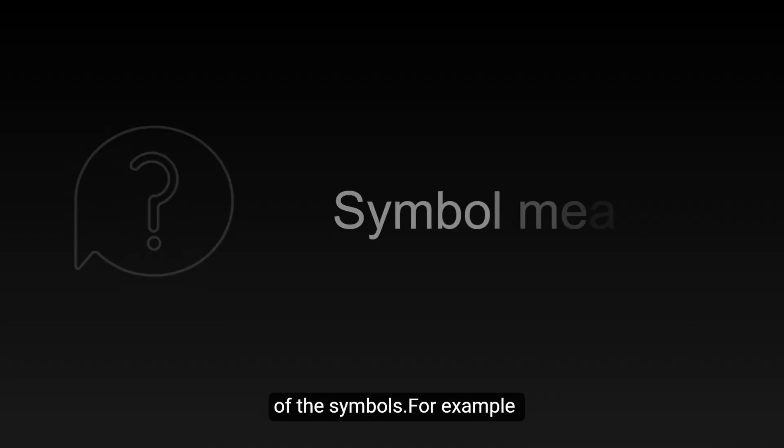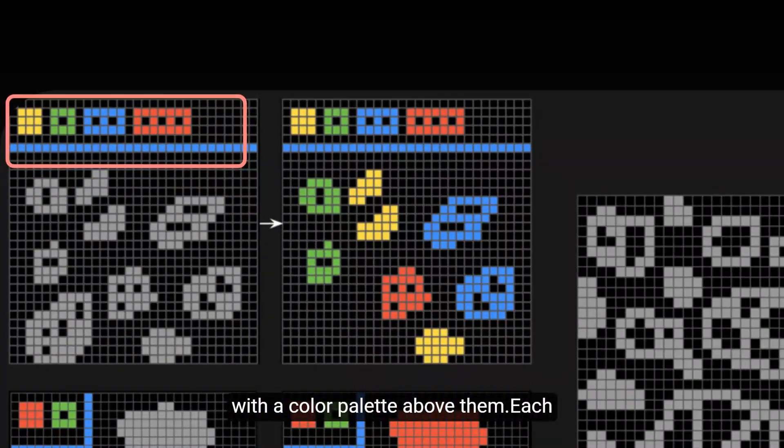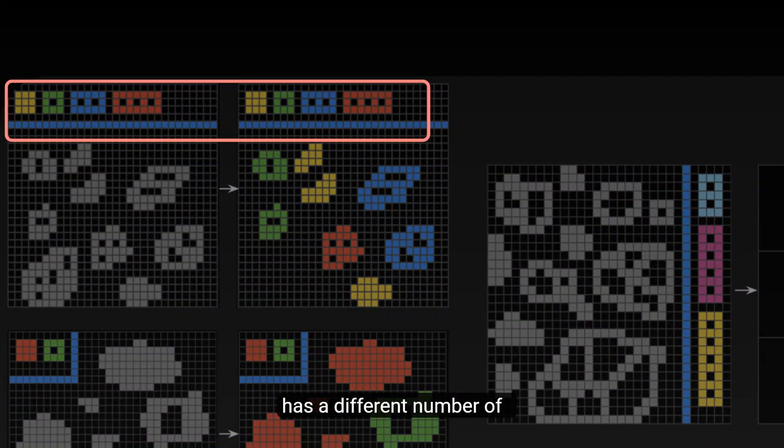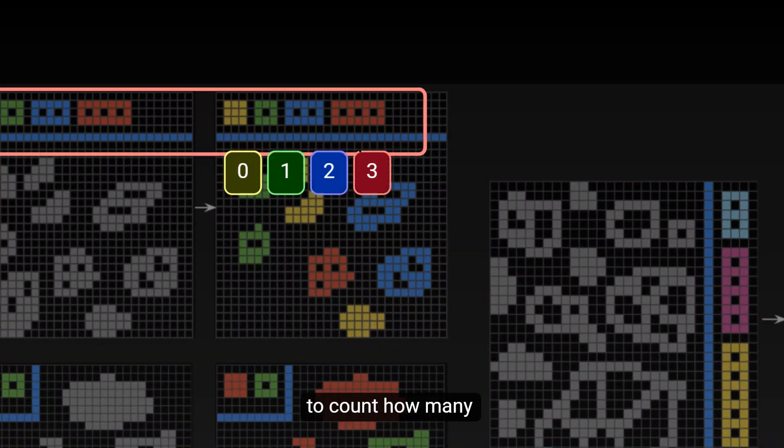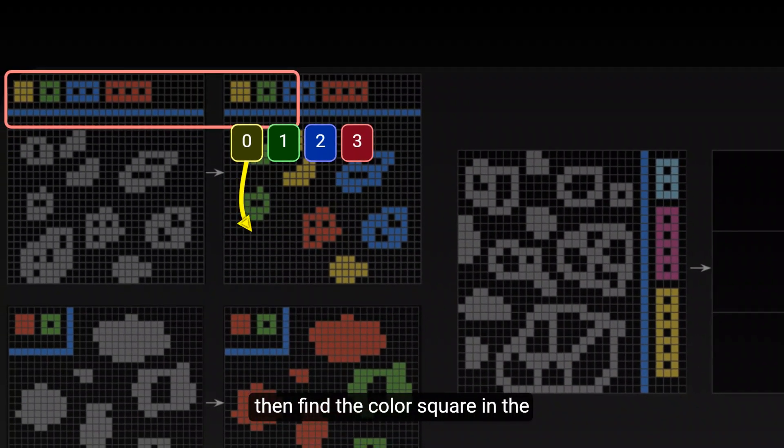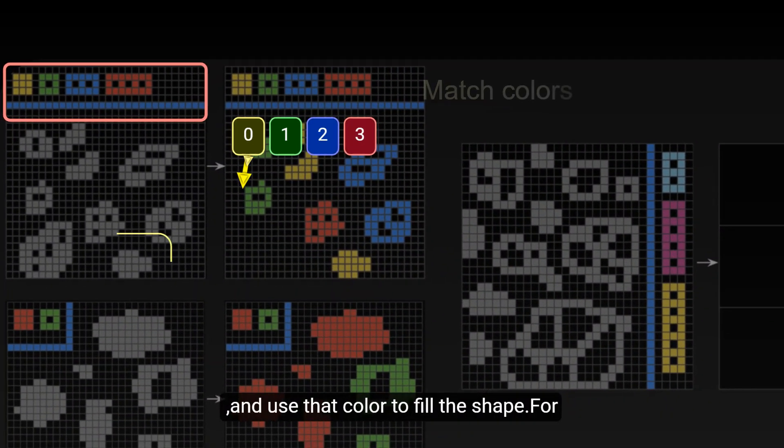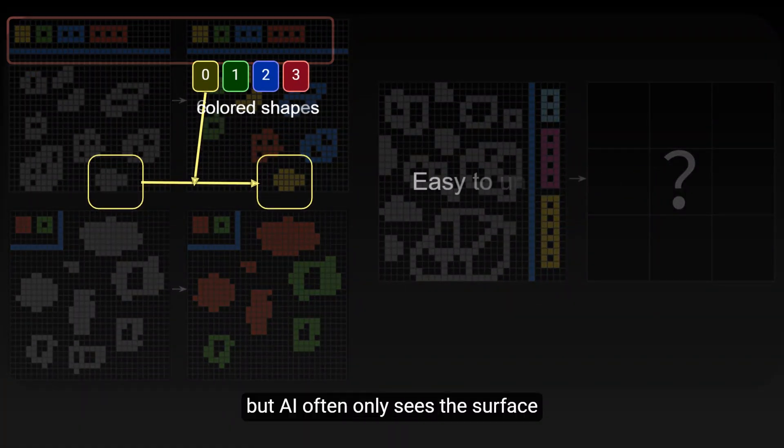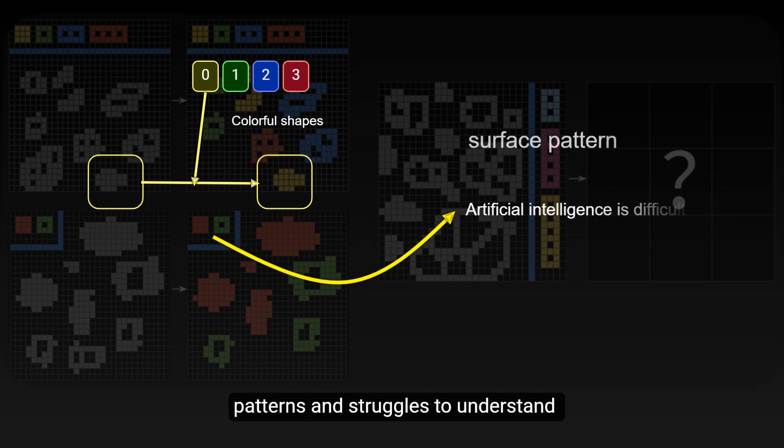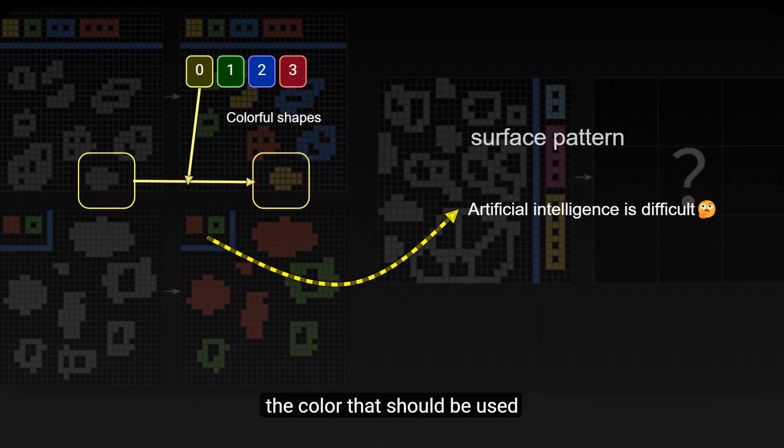The first is to understand the meaning of the symbols. For example, in a task, we see some gray shapes with a color palette above them. Each color square in the palette has a different number of holes. The key to solving the task is to count how many holes are in each gray shape, then find the color square in the palette with the same number of holes and use that color to fill the shape. For humans, it's easy to understand this rule, but AI often only sees the surface patterns and struggles to understand the relationship between the number of holes and the color that should be used.